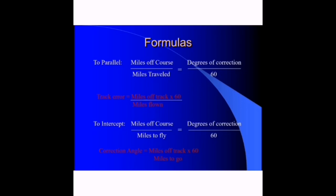The formula to intercept is miles off course over miles to fly equals degrees of correction over 60. This can be simplified as correction angle equals miles off track times 60 over miles to go. These are the simple formulas used to apply the 1 in 60 rule.